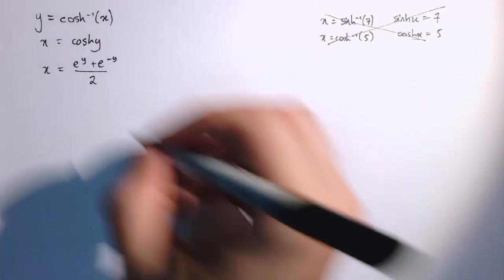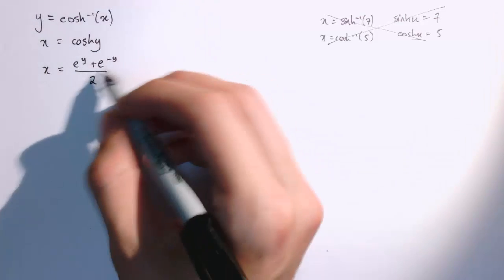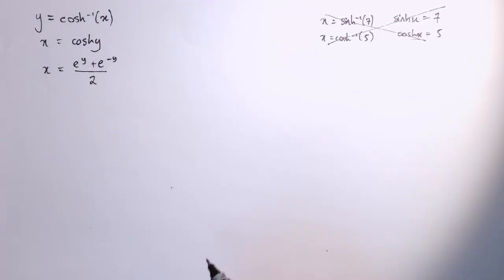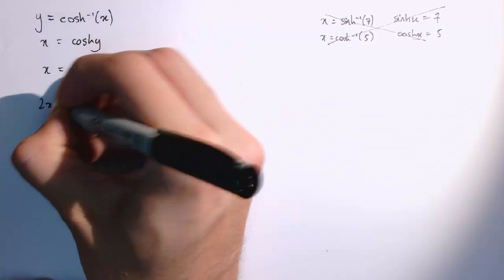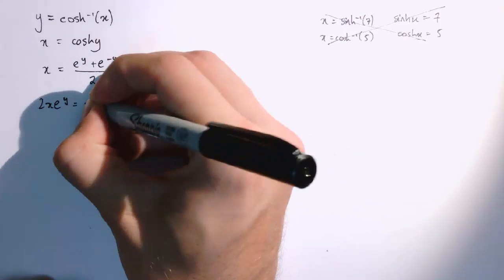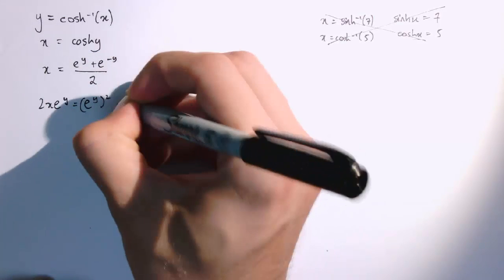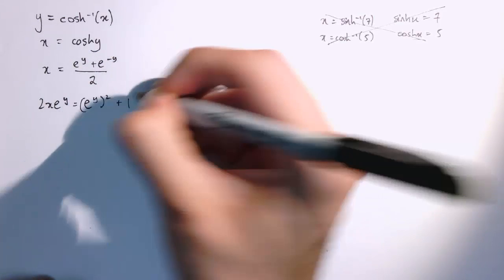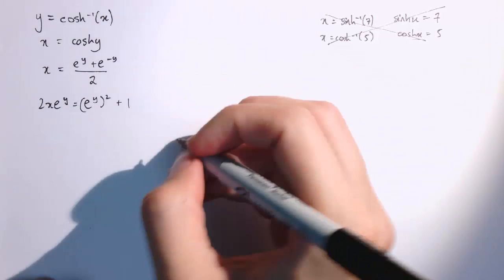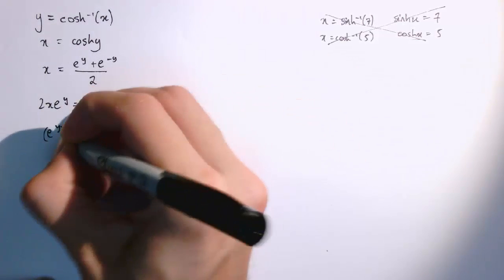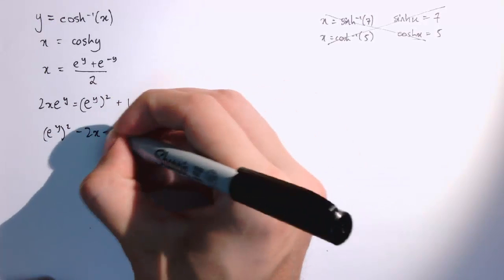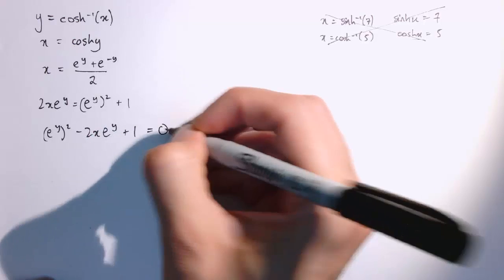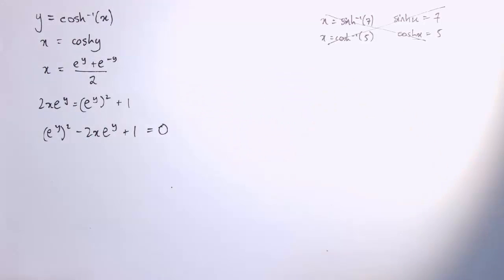And multiplying this through by 2 and then by e to the y, in the same sort of way as we did when we were solving equations in a previous video, that will give us 2x e to the y equals e to the y squared plus 1. And then writing this as a quadratic equation in the usual form, e to the y squared minus 2x times e to the y plus 1 equals 0. So we've got a quadratic equation in e to the y.